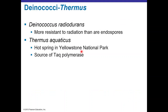Deinococcus thermus includes Deinococcus radiodurans, which is highly resistant to radiation because it has enzymes that repair radiation-induced DNA damage — it can stitch together broken DNA pieces. It is more resistant to radiation than endospores. Thermus aquaticus was discovered in hot springs and is the source of Taq polymerase, an enzyme used to amplify small pieces of DNA and make copies.